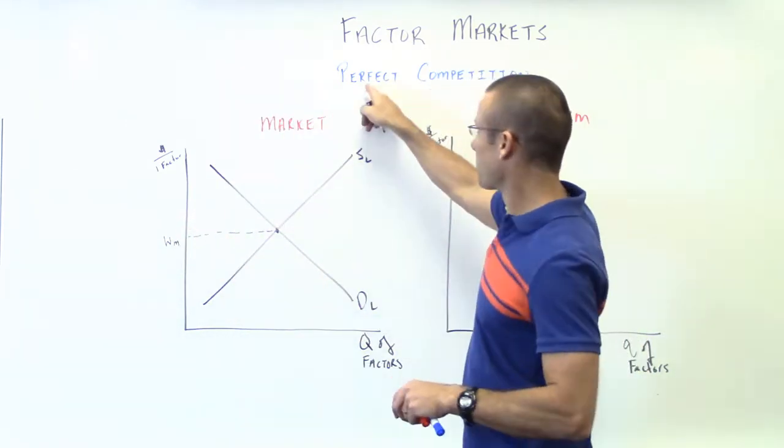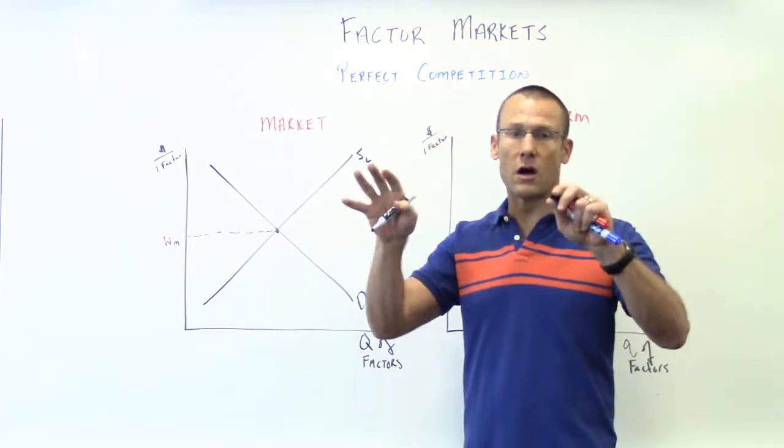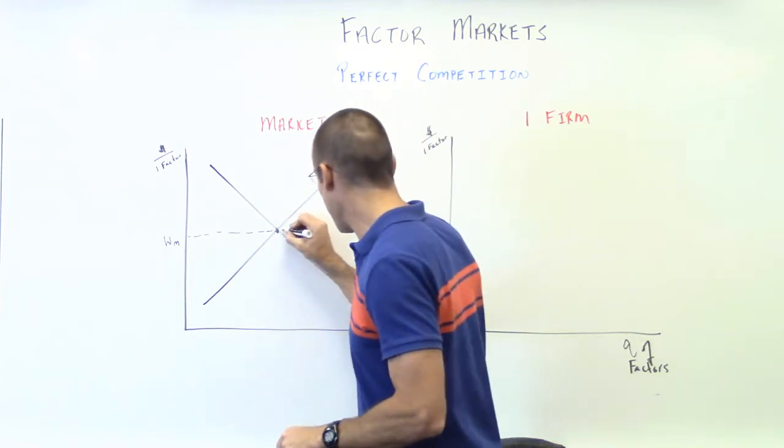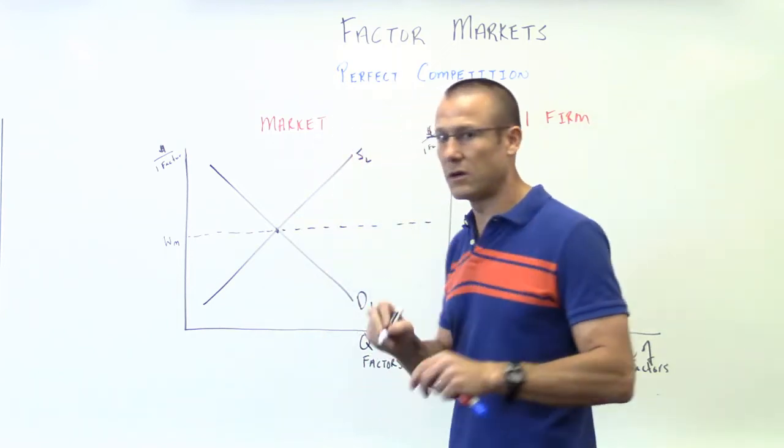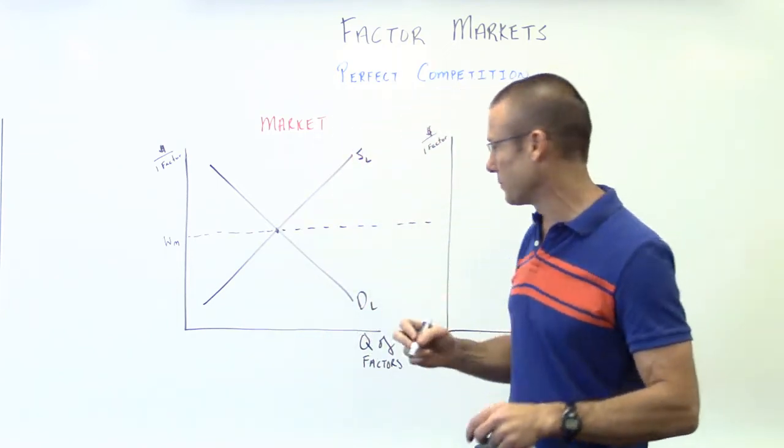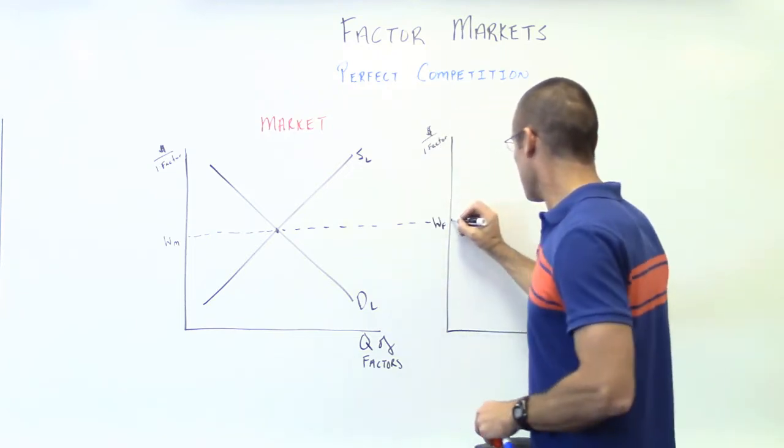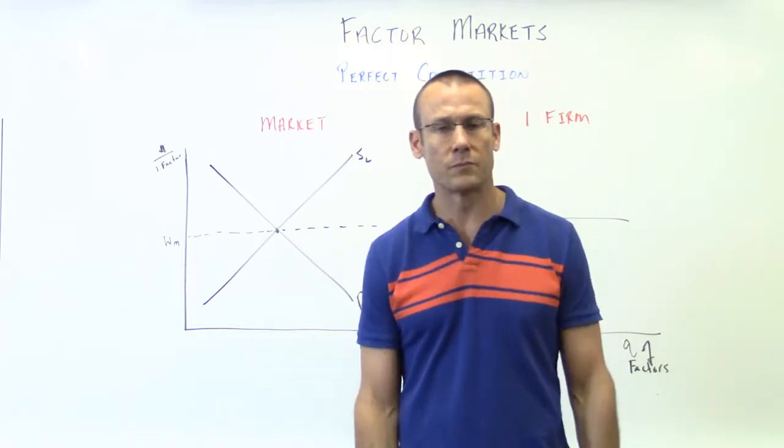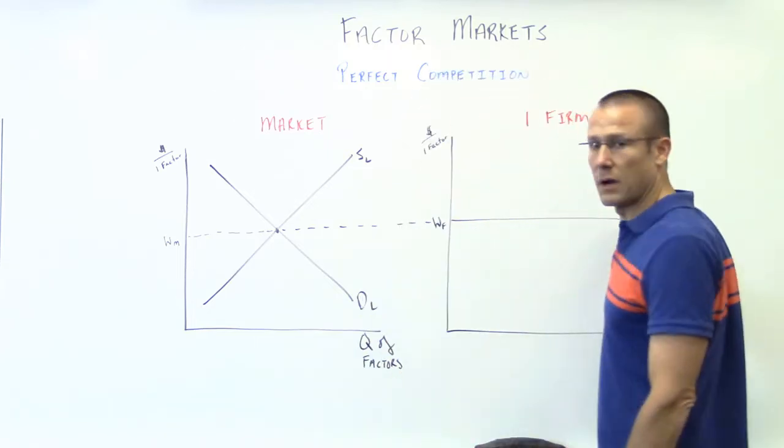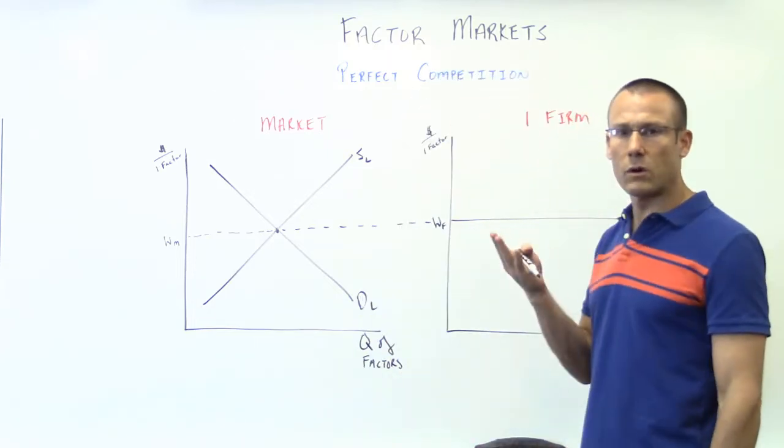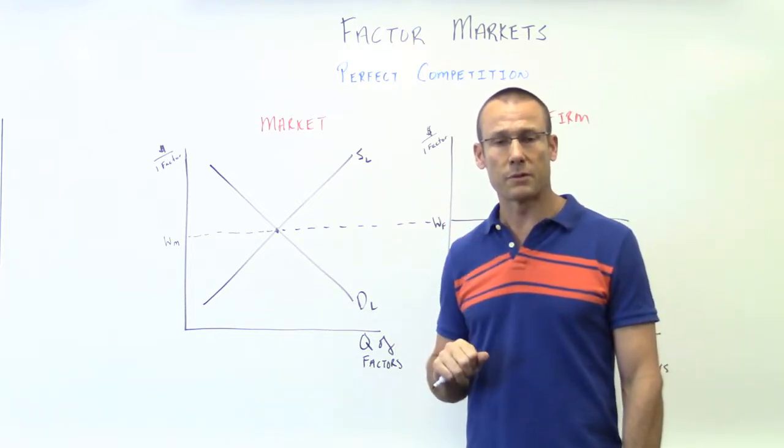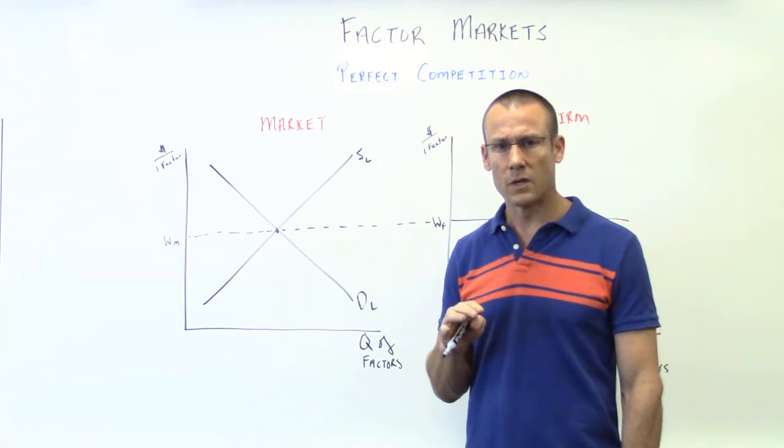The firm, since it's perfect competition, there's tons of firms hiring from the same labor pool. They're going to have to take that wage. They're a wage taker. Sounds very familiar. Wage firm. I'm going to draw a solid line, but now I've got a super important question. In a product market, you might remember I'd always put a D right there. What am I going to write? Am I going to write demand or supply? We're in a factor market.